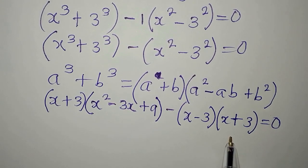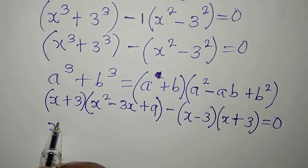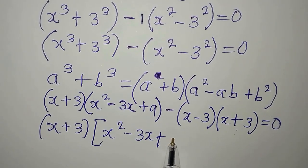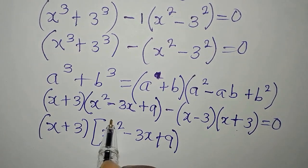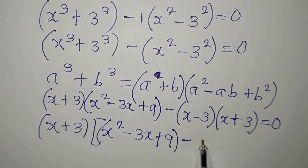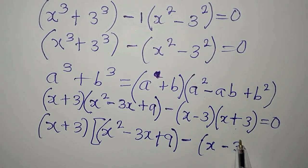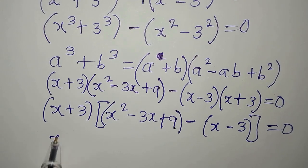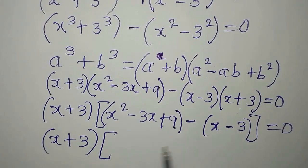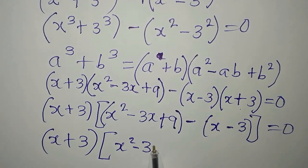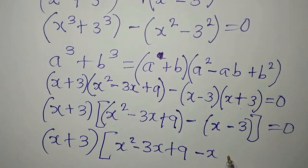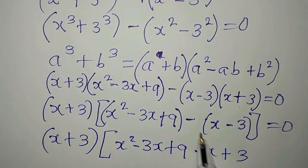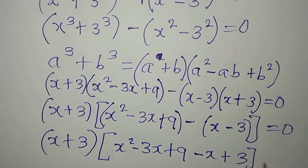From here we can see x plus 3 in two places, so we factorize x plus 3 out. Inside we have x squared minus 3x plus 9, minus open bracket x minus 3, all equated to 0 — since x plus 3 is already factored out. Opening the bracket: x squared minus 3x plus 9 minus x plus 3 equals 0, because negative times x is negative x, and negative times negative 3 is plus 3.